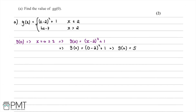For the next part we do the second composition. Since g of 0 is 5, we now need to work out g of 5. We note that x equals 5 is greater than 2, so g of x is going to be equal to 4x minus 7.